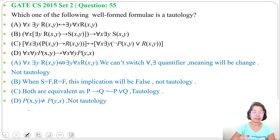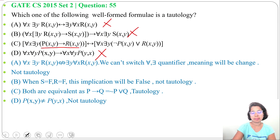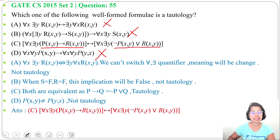So we found that option A is not a tautology, option B is not a tautology, option D is not a tautology. Only option C is a tautology. Both sides are equivalent, and p implies r is equivalent to negation p or r, and the quantifiers are the same. So the answer is option C.